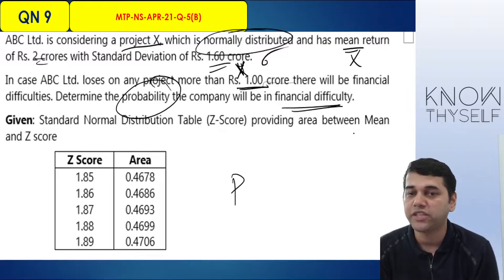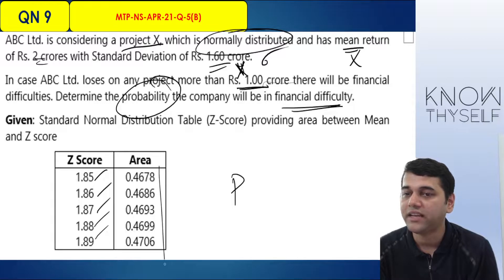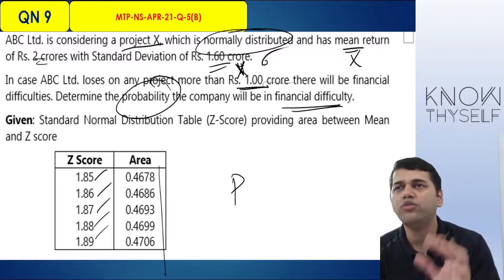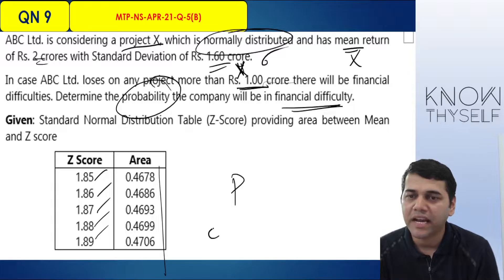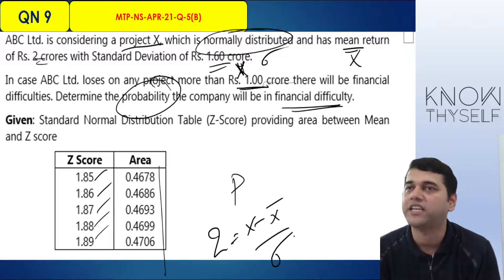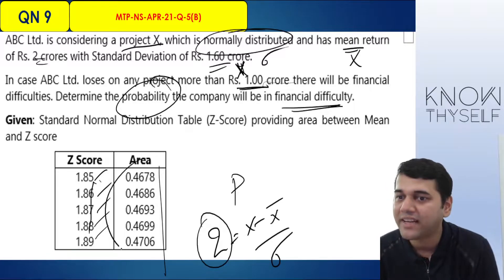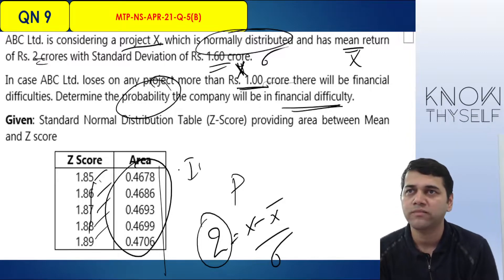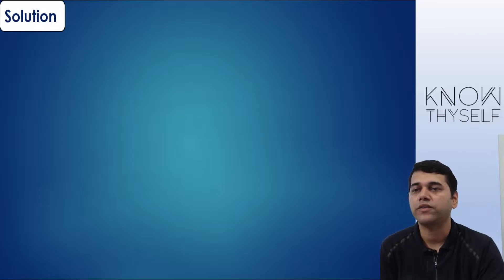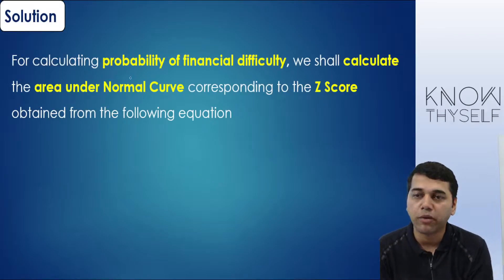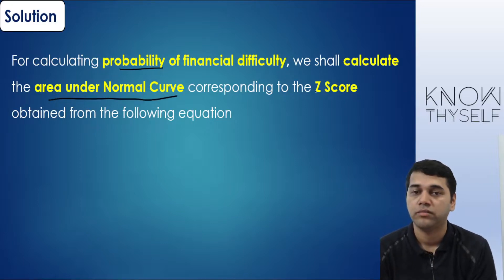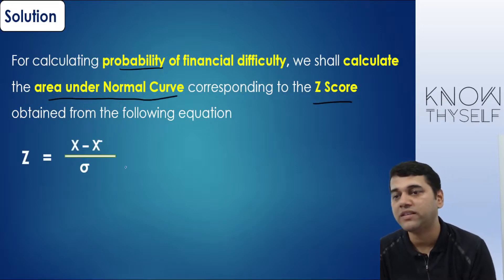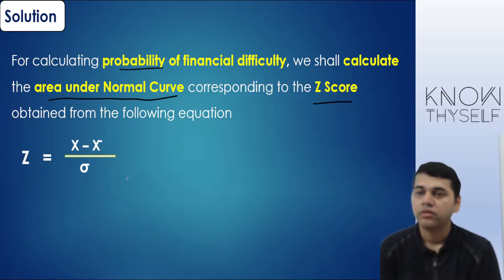The normal standard distribution table is given with values at 1.85, 1.86, 1.87 and corresponding area values. To find probability: I need a Z value using Z = (X − X̄) / σ. If I do this, I get a Z value. Plot the Z value and find where it falls, then do interpolation — similar to what we do in Black-Scholes problems.